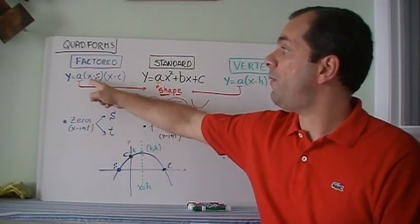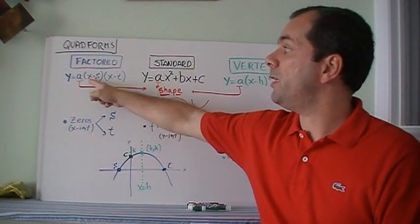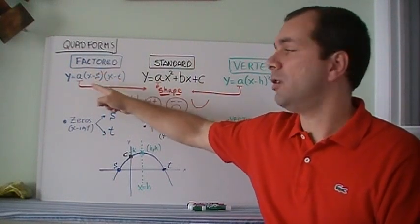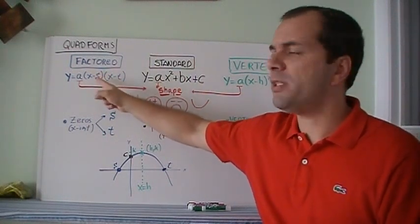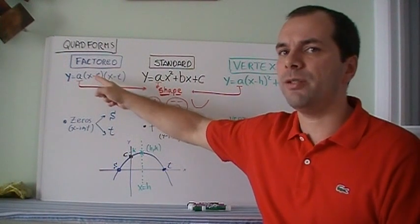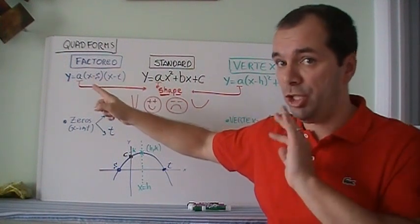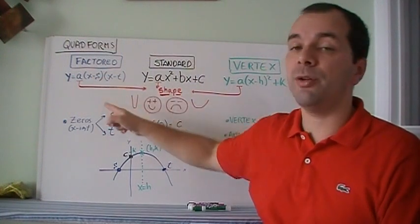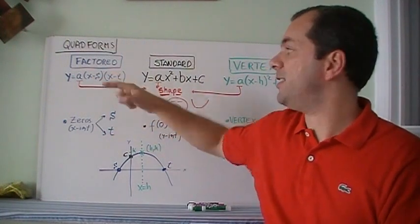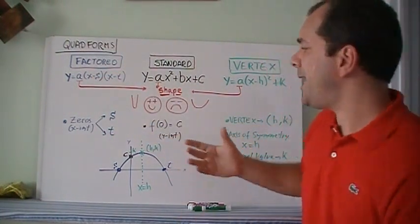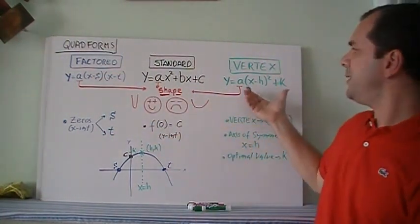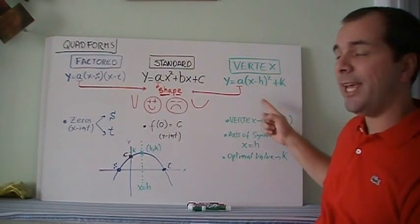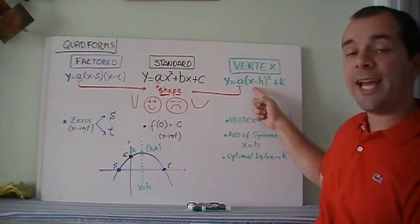From factored form, you get the zeros. To find the zeros, you need to find the number that makes each bracket equal to zero. In general, the zero ends up being the opposite of what you see in the bracket — the number that makes that bracket go to zero.